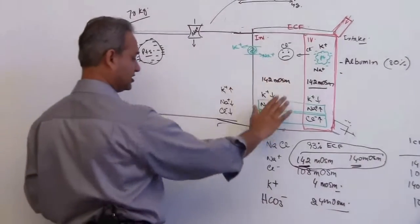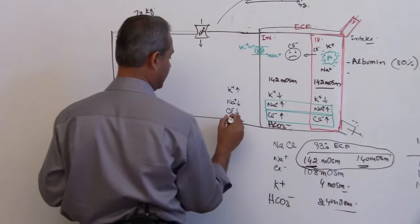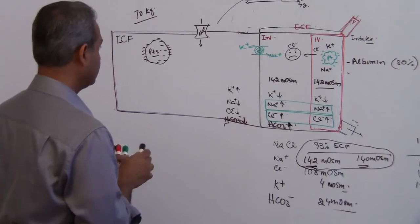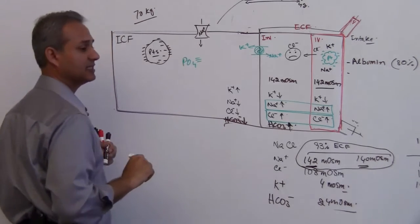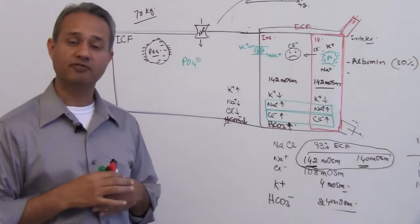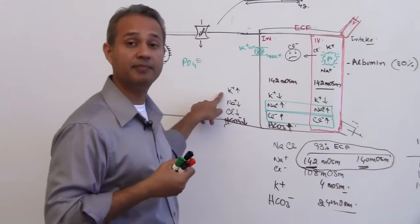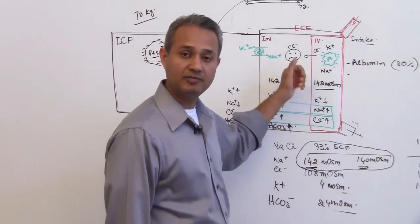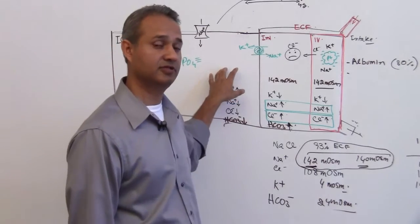To summarize what we have established: more sodium, chloride, and bicarbonate are outside the cell in the extracellular fluid. Inside the cell there are greater amounts of proteins, phosphates, and sulfates. If there is a problem with phosphates or magnesium, we are talking about something happening inside the cell. Potassium imbalances ultimately affect inside the cell — even if potassium changes outside, it is going to affect the intracellular environment.